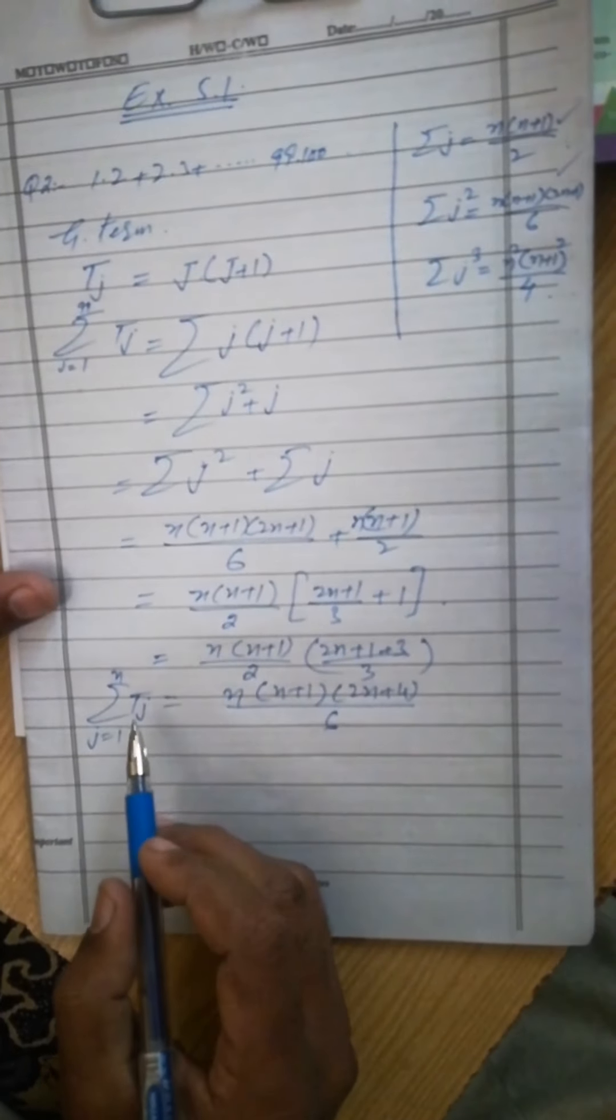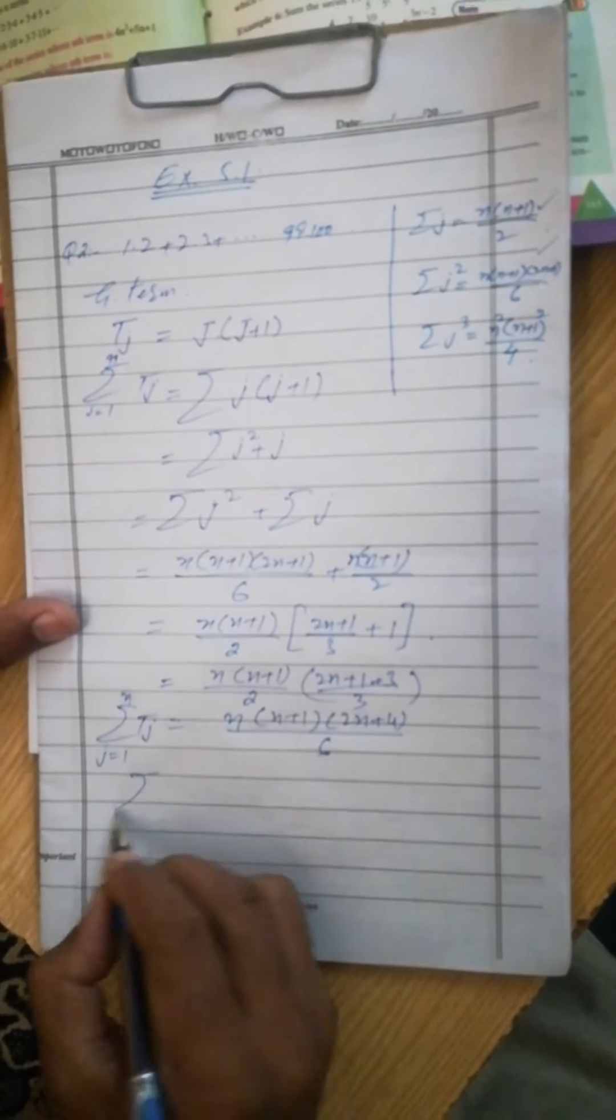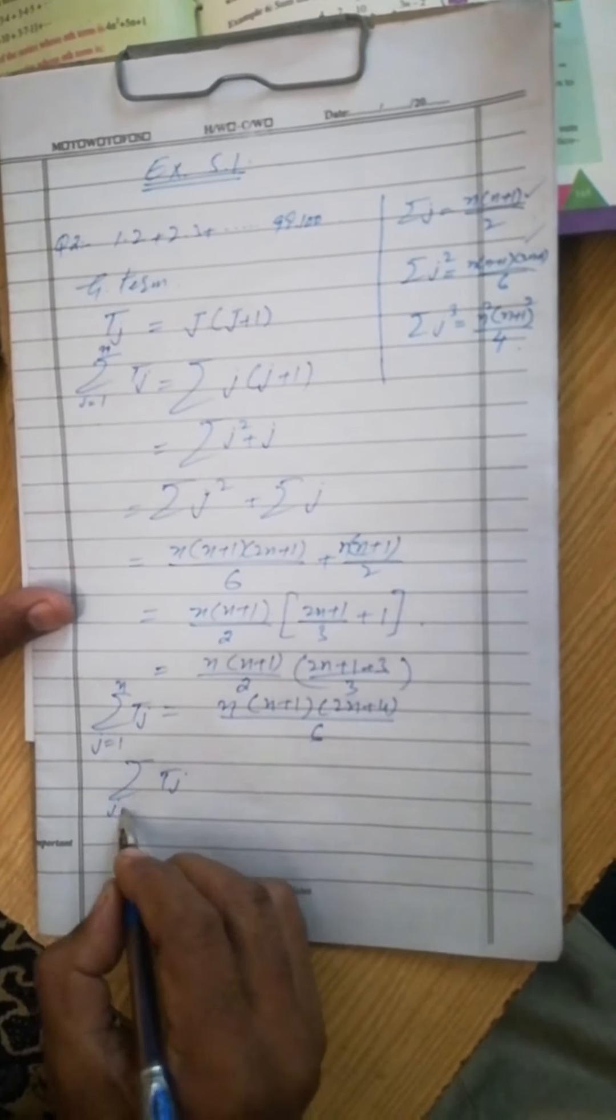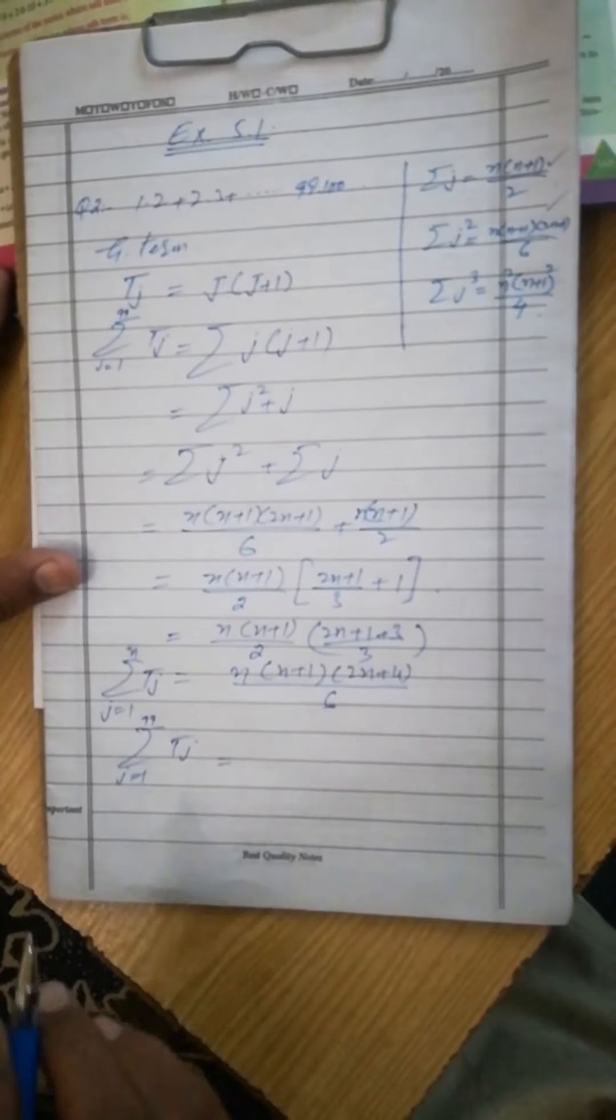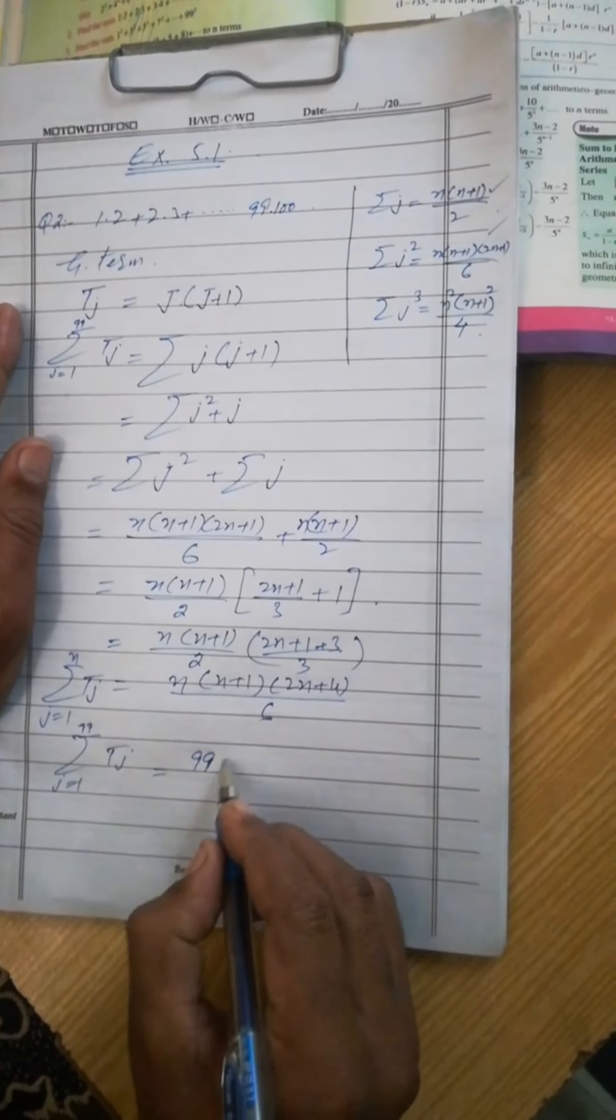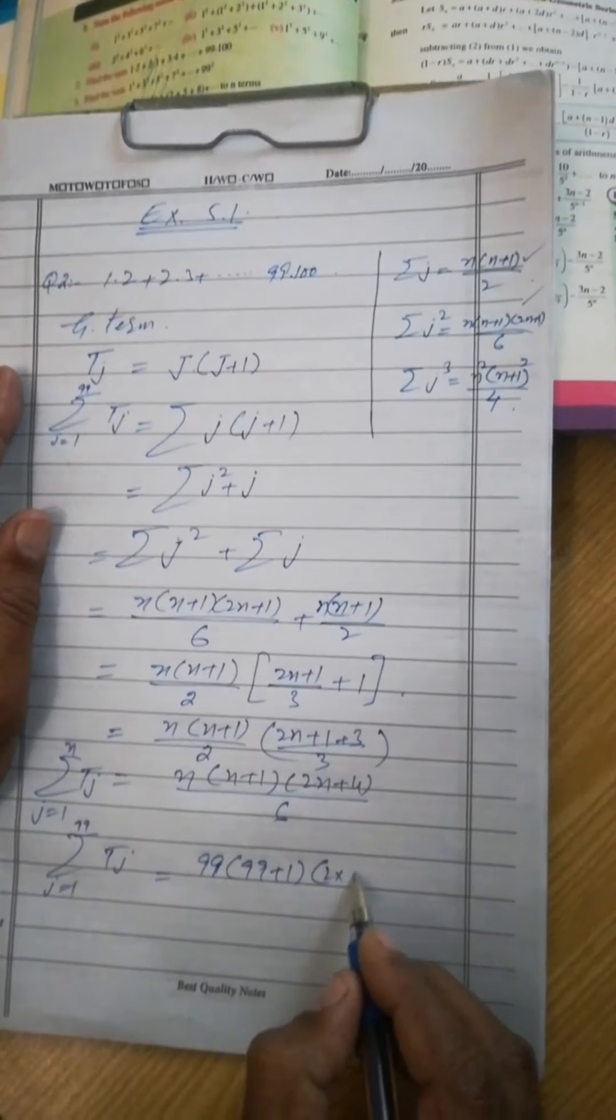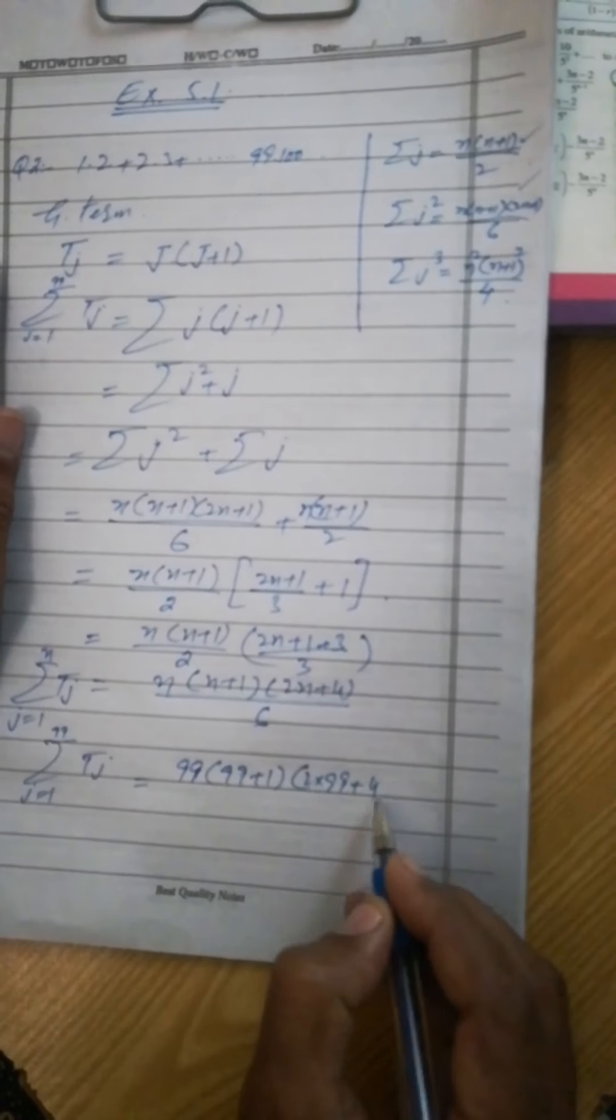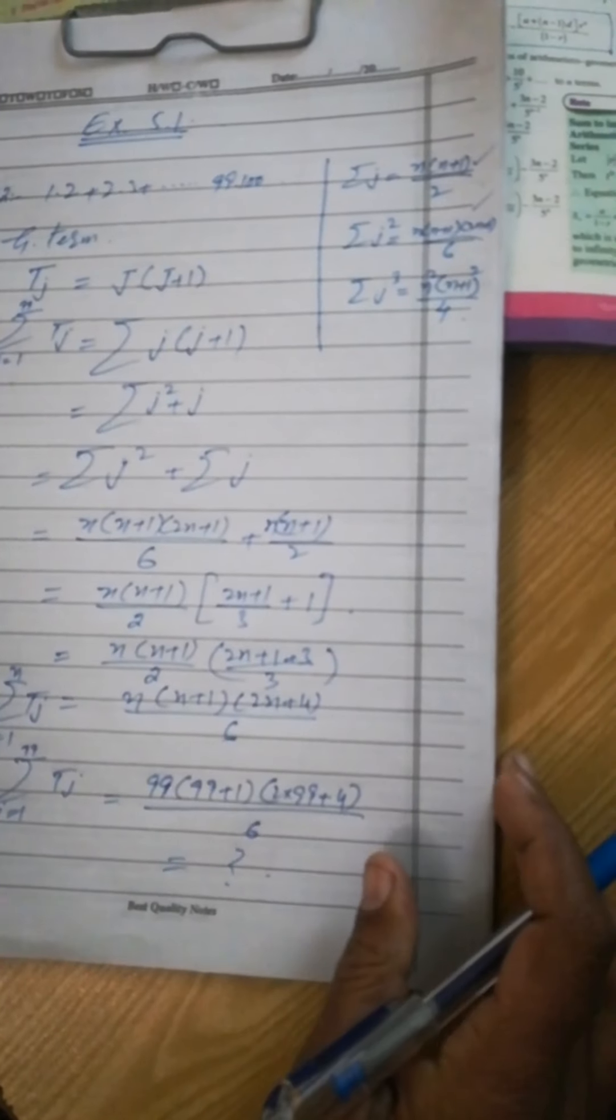Now put the values here. N is equal to 99. So T_j, j from 1 to 99, value of this n is 99: 99+1, 2×99+4, divided by 6. Do this simplification. You will get the answer.